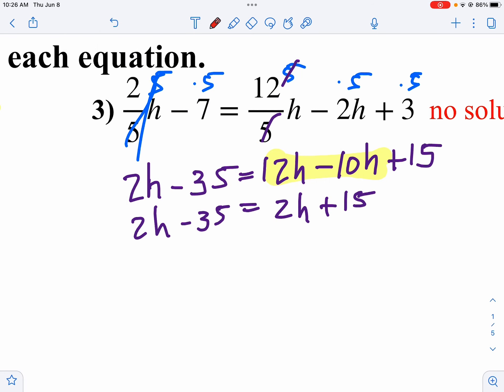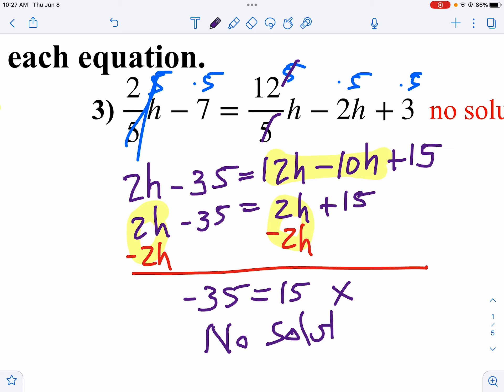Well, let's move all my h's to one side, and notice when I do that on both sides, the h's cancel out. I'm left with negative 35 equals 15. That is not true, is it? So if it's not true, we're going to say no solution. And there's your answer.